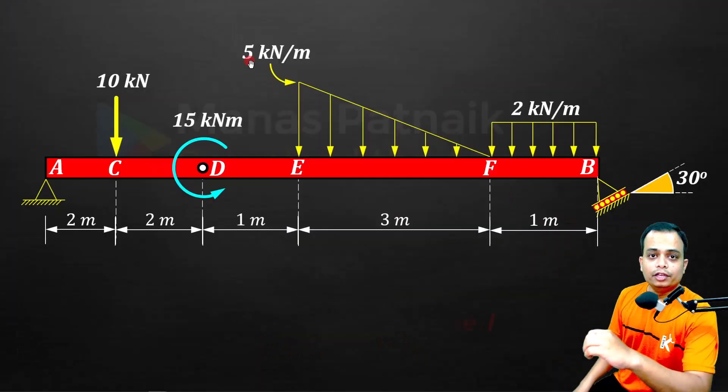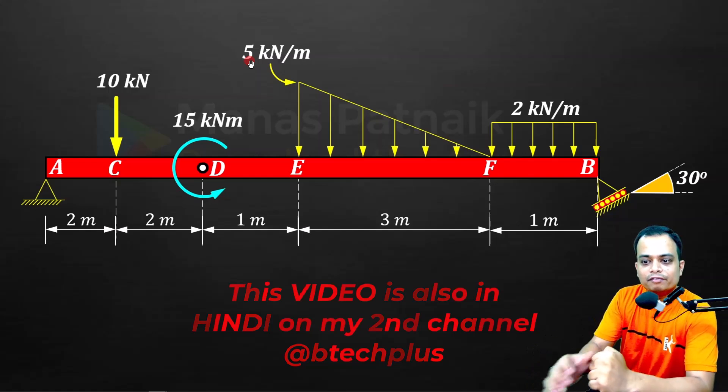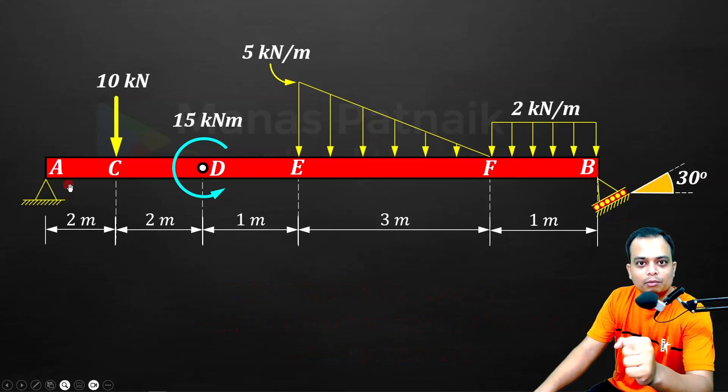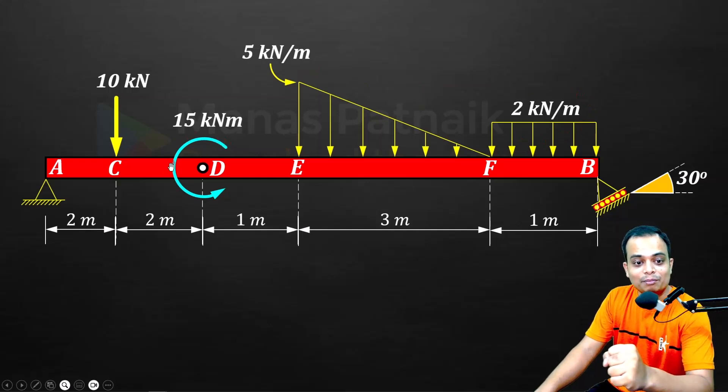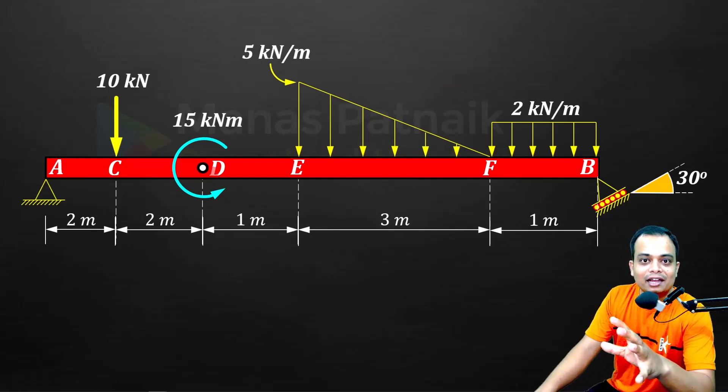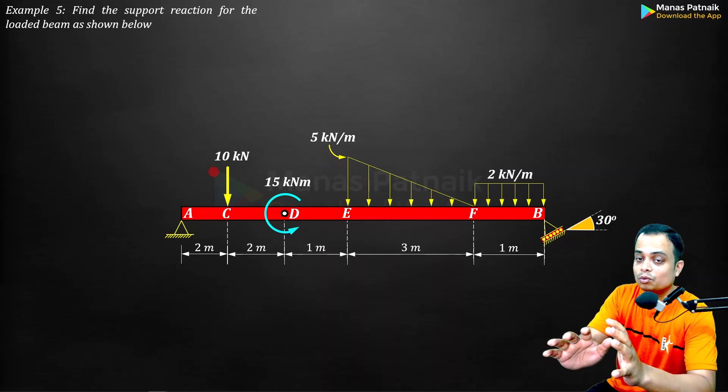Good evening students, this is Manas Patnaik here for Antutor. Today's problem is for all the students who have difficulty finding the support reactions. Let's say I ask you to find me the reaction at B, find me the reaction at A. Will you be able to tackle this problem, especially when you notice that there is a point load, a triangularly varying load, a uniformly distributed load, and apart from that there seems to be a moment of a couple at point D on the beam?